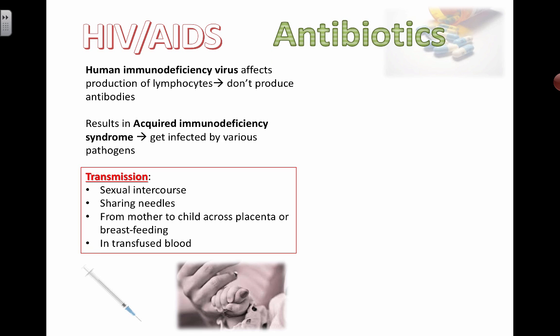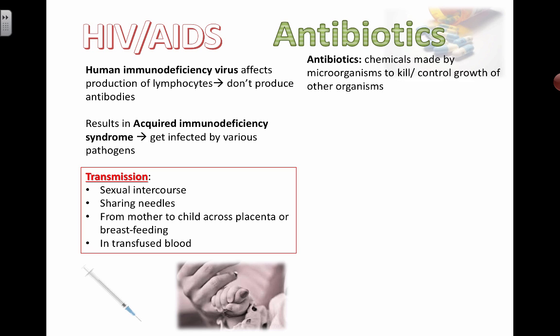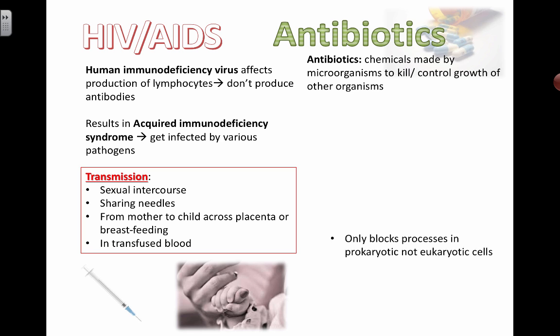Antibiotics — not to be confused with antibodies, which are proteins made by our own white blood cells — are drugs that we have created to help us fight off bacterial diseases and bacterial diseases only. When we say chemicals made by microorganisms to kill or control growth of other organisms, the truth is that a lot of these antibiotic drugs have actually been synthesized or isolated from other types of living organisms. Penicillin is one example we'll talk about shortly.